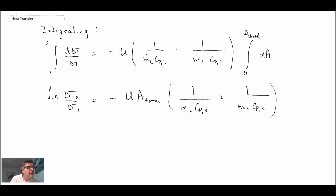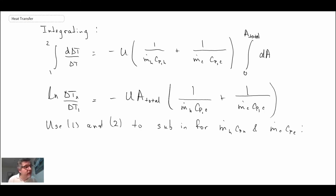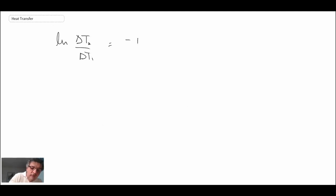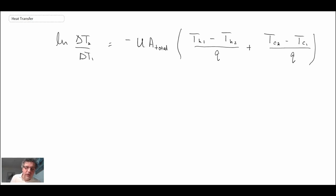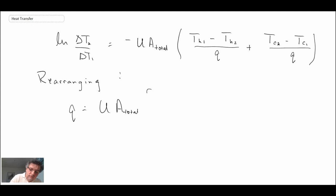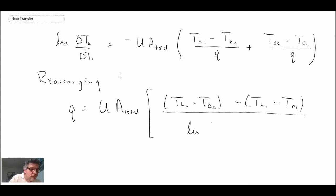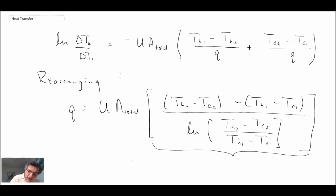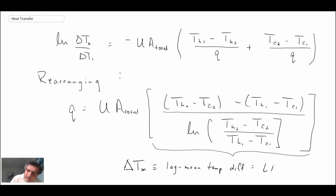We now want to get rid of the mass flow rate on the left-hand side and express things in terms of temperatures, so we use equations 1 and 2. Rearranging with Q on the left-hand side, we get this large expression, and this is our delta T_m. That is how we calculate the temperature difference between the two fluids, and it is referred to as the log mean temperature difference, or LMTD.